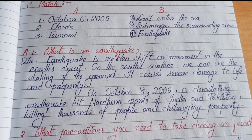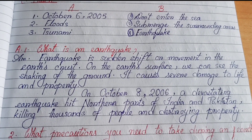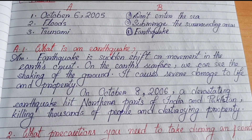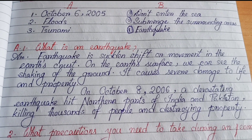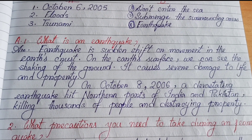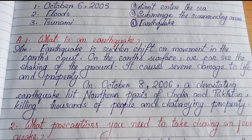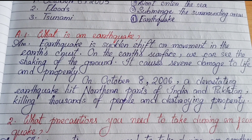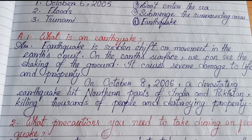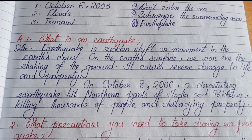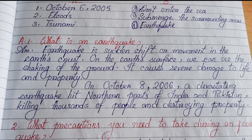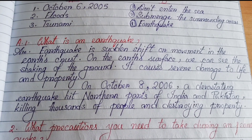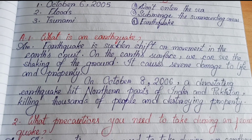We move to the question answers. Number A, question number 1: What is an earthquake? An earthquake is a sudden shift or movement in the earth's crust. On the earth's surface, we can see the shaking of the ground. It causes severe damage to life and property. On October 8, 2006, a devastating earthquake hit northern parts of India and Pakistan, killing thousands of people and destroying property.